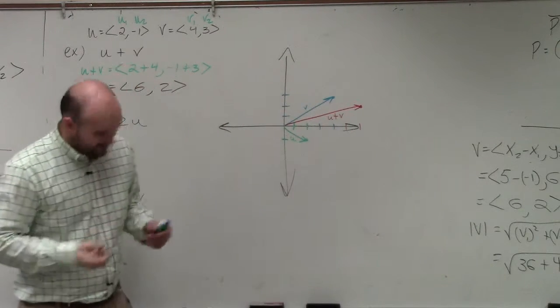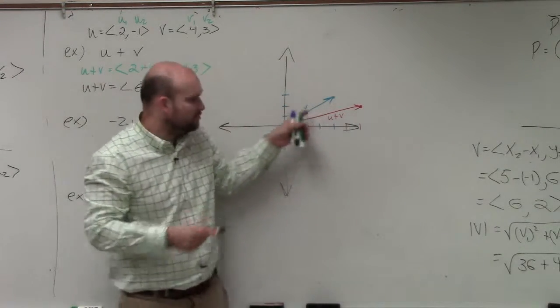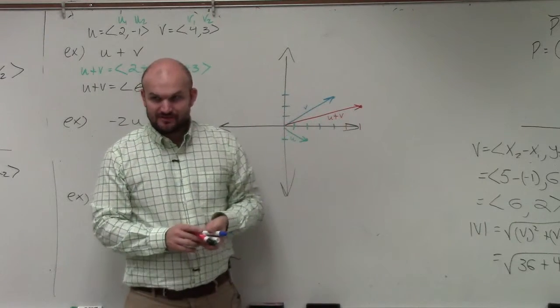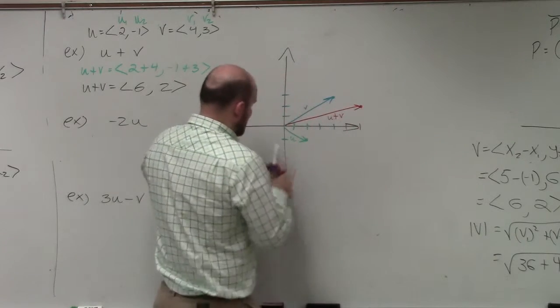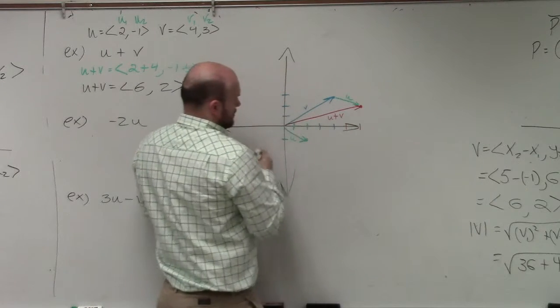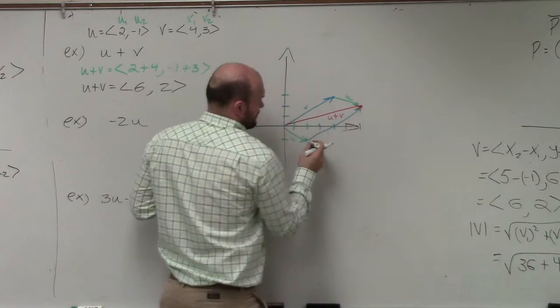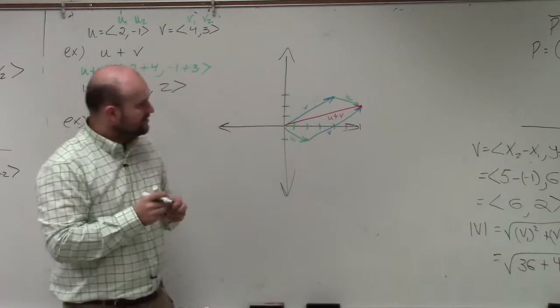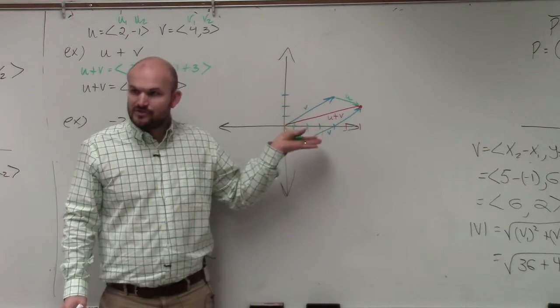Now, what I want you guys to kind of understand is, first of all, does this u plus v kind of look like the combination of these two vectors? And yes. And actually, if you want to go ahead and graph them, you can do that by taking, this is what we call, tail to end. So having the tail of one vector goes to the head, goes from the head of the other vector. Do you guys see how they kind of create what we call like the parallelogram? OK, so graphing.